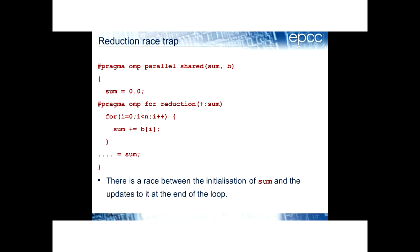Another trap is reductions on work-sharing loops. The problem happens if you're inside a parallel region and want a loop with a reduction that only has the scope of the loop — you want the result of the reduction at the end of the loop rather than at the end of the parallel region. You need to be careful because there's a potential race between the initialization of the reduction variable and the update to it which occurs implicitly at the end of the loop construct.